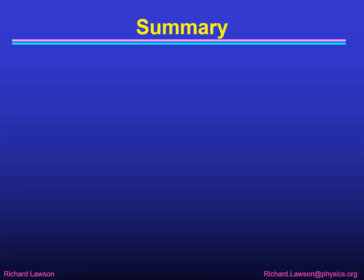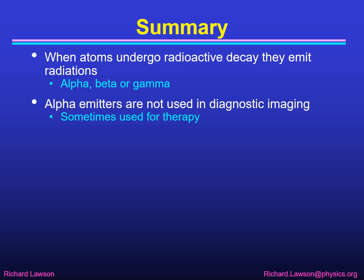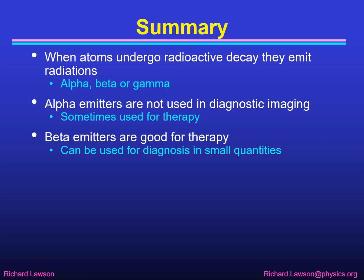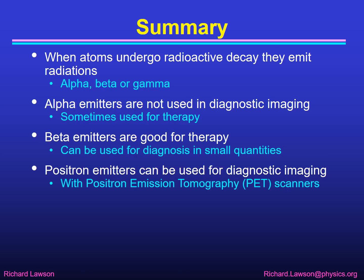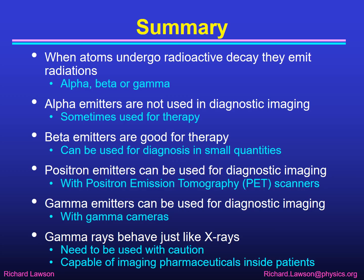To summarize this introduction to radioactivity: when atoms undergo radioactive decay they emit radiation — either alpha, beta, or gamma. Alpha emitters are not used in diagnostic imaging due to their very local radiation dose, though they are sometimes now used in special sorts of therapy. Beta emitters are good for therapy and can be used for diagnosis as long as only small quantities are administered. Positron emitters can be used for diagnostic imaging if we have PET scanners. Gamma emitters can also be used for diagnostic imaging with conventional gamma cameras, and gamma rays in fact behave just like x-rays. They need to be used with caution but are capable of imaging pharmaceuticals inside patients, which is what nuclear medicine is all about.